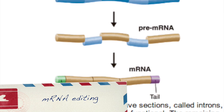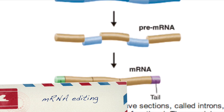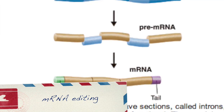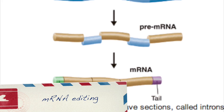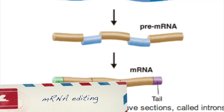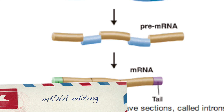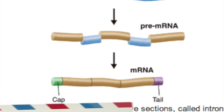Second, splice together the parts of mRNA that code for a protein, better known as the exons. Finally, a poly-A tail and a methyl cap are added to mRNA. Now mRNA is ready to go through translation.